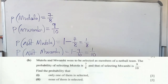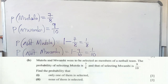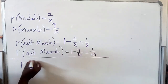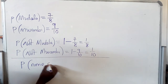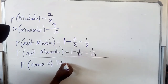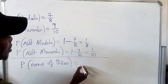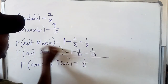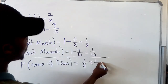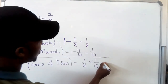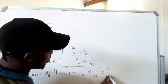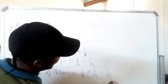For the next question — the probability of picking none of them, meaning not picking anyone — you just multiply the probability of not picking Muthola by the probability of not picking Mwami, which equals 1 over 80. So this is our answer.